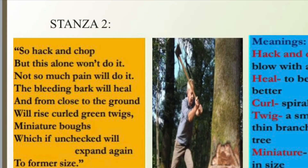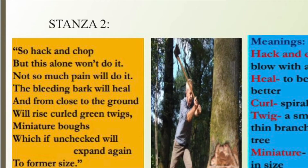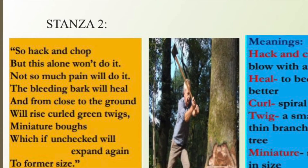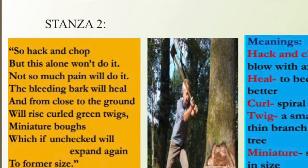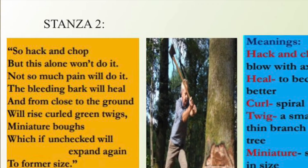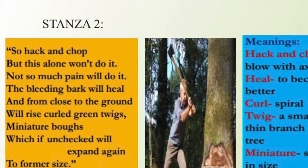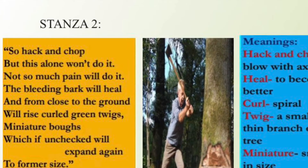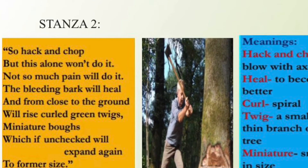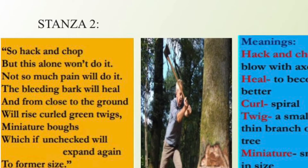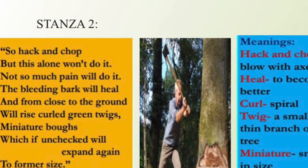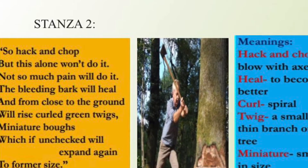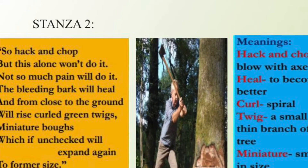In stanza 2, the poet writes: So hack and chop, but this alone won't do it. Not so much pain will do it. The bleeding bark will heal, and from close to the ground will rise curled green twigs, miniature boughs, which if unchecked will expand again to form their former size. Here we are introduced to new words.